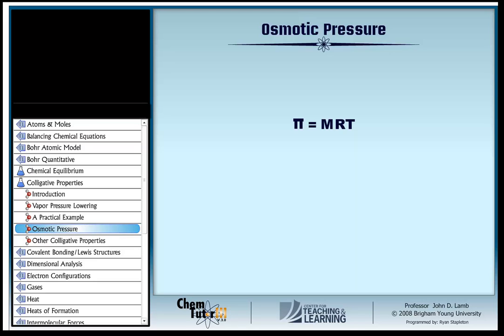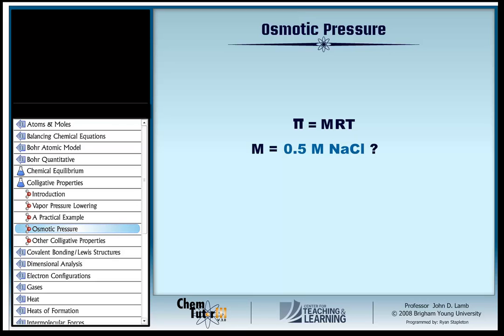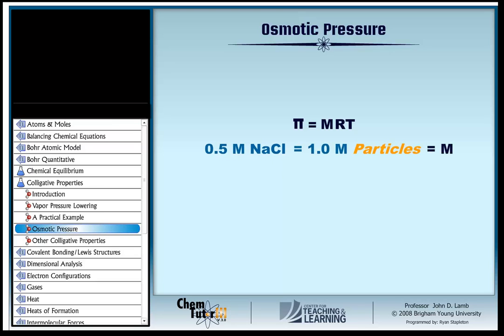As a colligative property, osmotic pressure requires that we use the concentration of solute particles. So if we want to know the osmotic pressure between water and a half molar solution of sodium chloride, or seawater, we should not use half molar as the solute concentration. Every mole of sodium chloride produces two moles of ions — one of sodium ions and another of chloride ions — so the concentration of particles in this solution is one molar. The calculation of osmotic pressure in this case uses that one molar concentration.